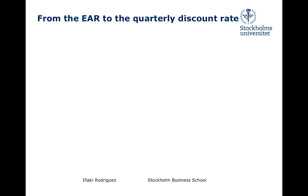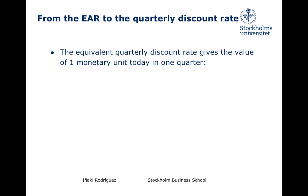The way to think about this is to realize that we can also use the quarterly discount rate to move money across time over periods of one year. Since we should get the same result regardless of what rate we use, this gives us an equality that we can then exploit to factor out the equivalent quarterly discount rate. More specifically, the discount rate that applies for a period of three months can be used to find the value of one monetary unit today three months from now, by simply doing this multiplication, where R_quarter denotes the equivalent quarterly discount rate.